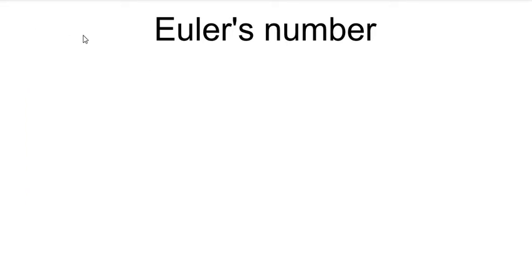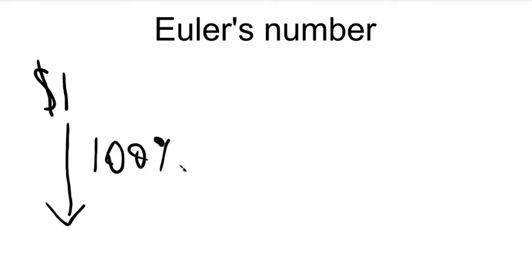Now let me try to visualize what E could be. Okay, so let's say you have a dollar. One dollar. And you have a 100% interest rate for one year. So, after one year, you have one plus 100% of one is one. Two dollars.